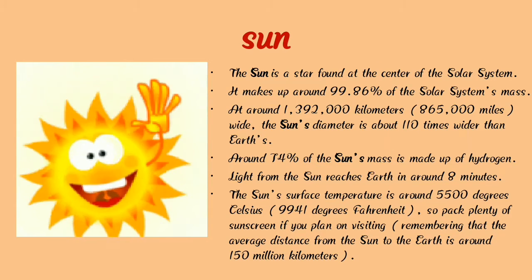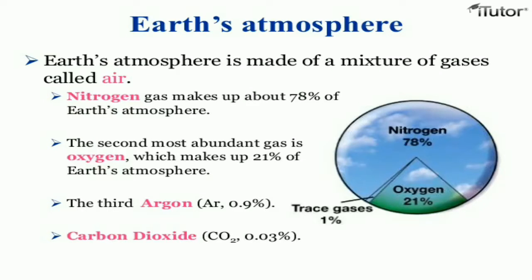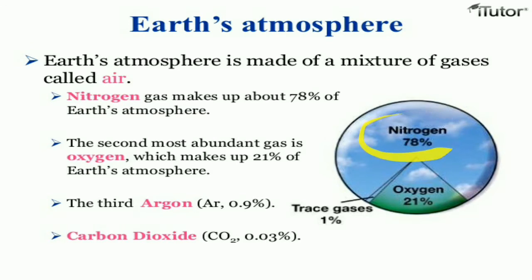Now we are going to learn the next slide: Earth's atmosphere. Earth's atmosphere is made of a mixture of gases — it's called air. Nitrogen gas makes up about 78% of Earth's atmosphere.